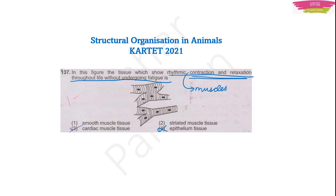Among the remaining three options — smooth muscle, cardiac muscle, and striated muscle — the correct answer is cardiac muscle tissue. Cardiac muscle tissue is highly vascularized, meaning it has a lot of blood capillaries. Those capillaries carry blood, which is the carrier of oxygen to the cells, and oxygen is required to work continuously without getting tired.